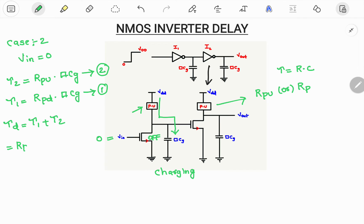Simply try to add them. So it is R pull up into CG plus R pull down into CG. So if I take CG as common it becomes R pull up plus R pull down.